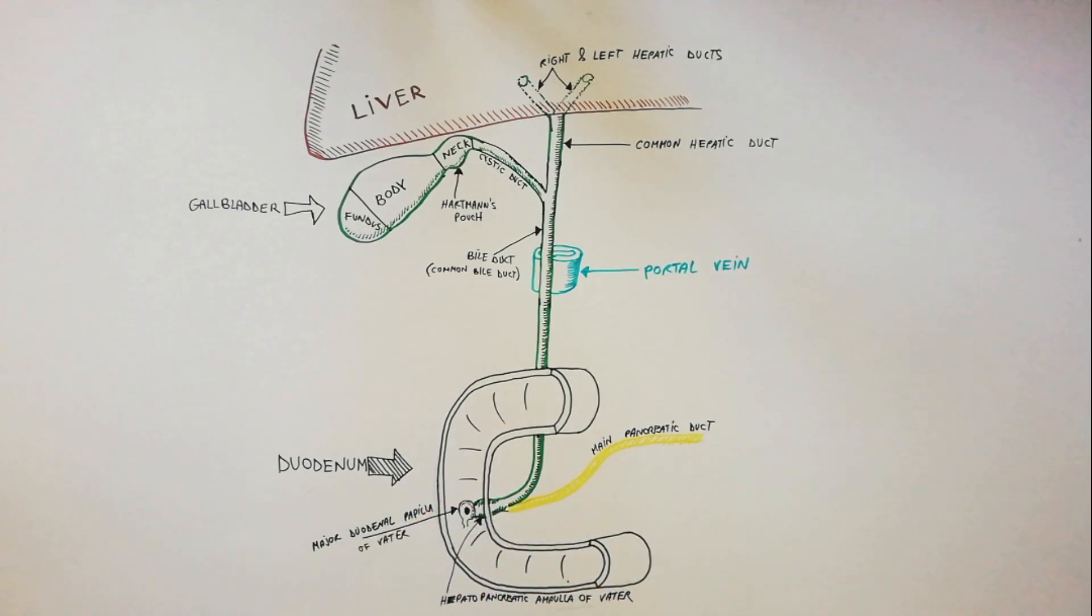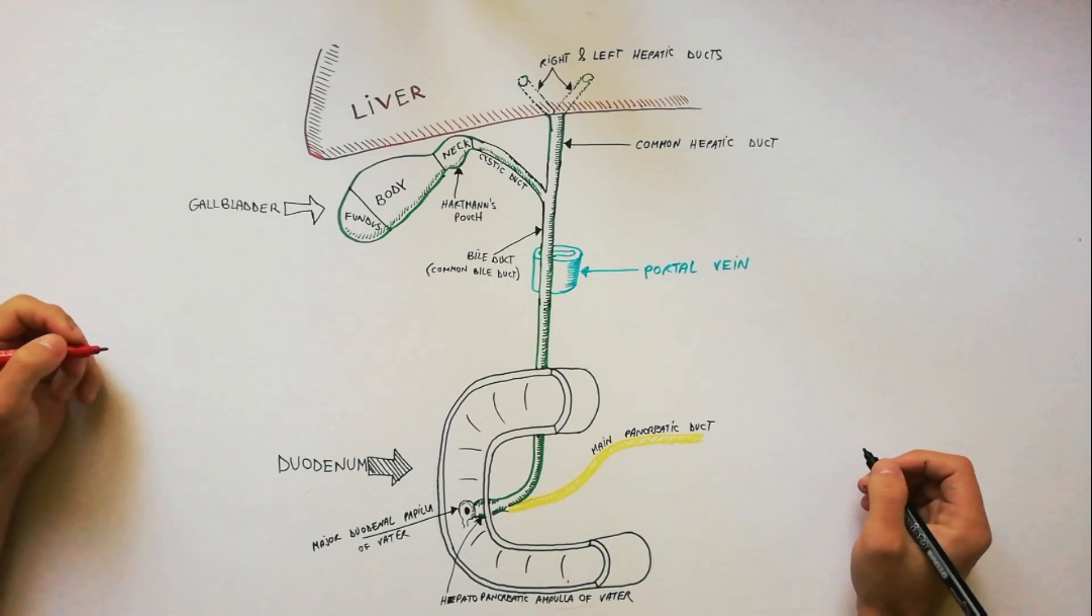The terminal parts of bile and pancreatic ducts, as well as ampulla, are surrounded by smooth muscle sphincters.